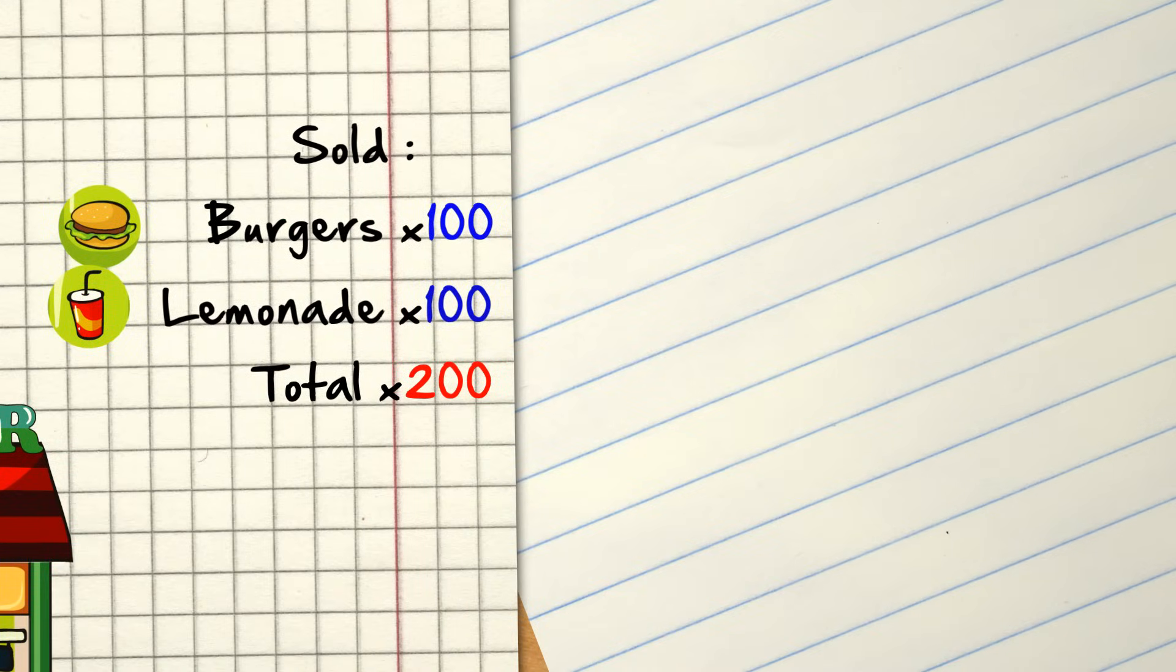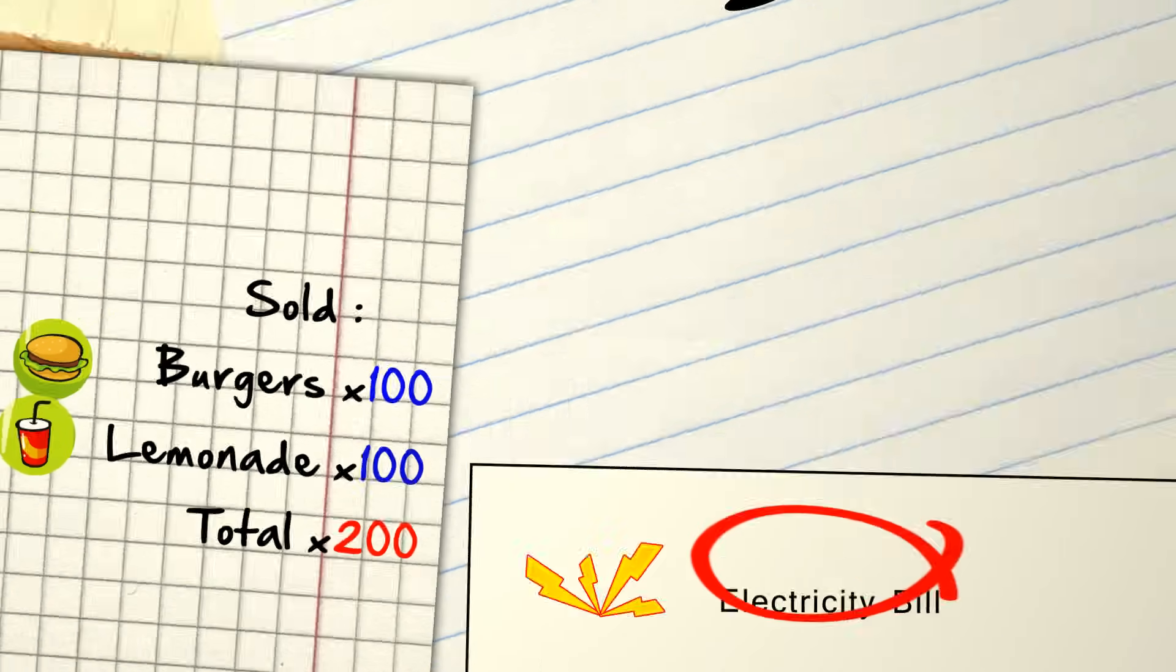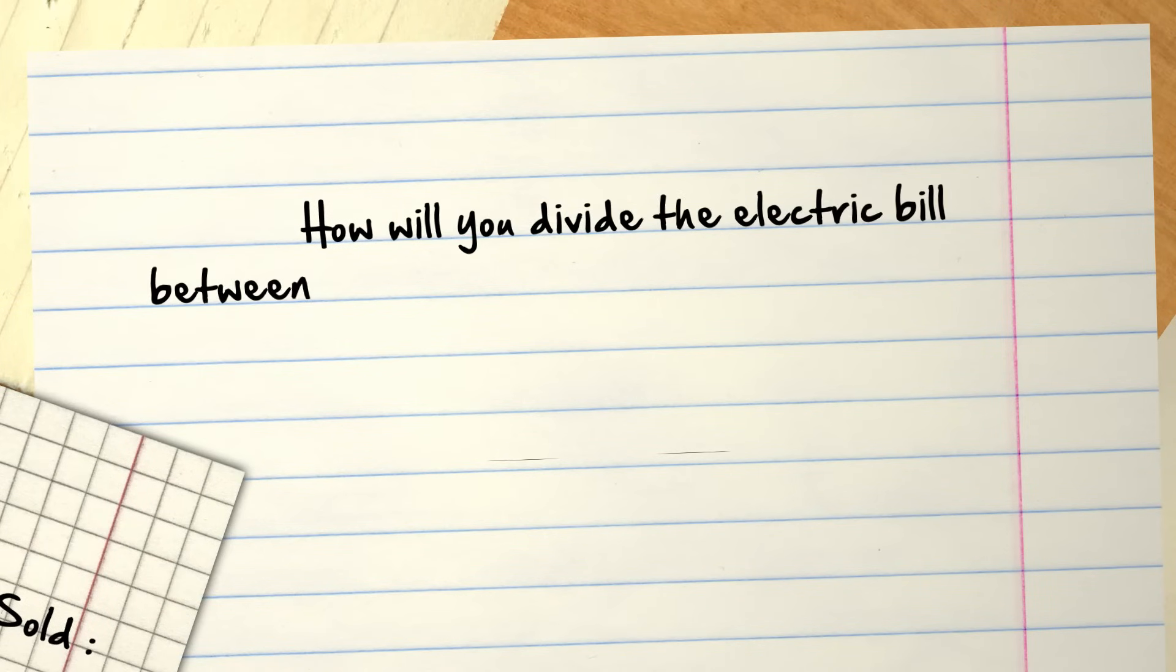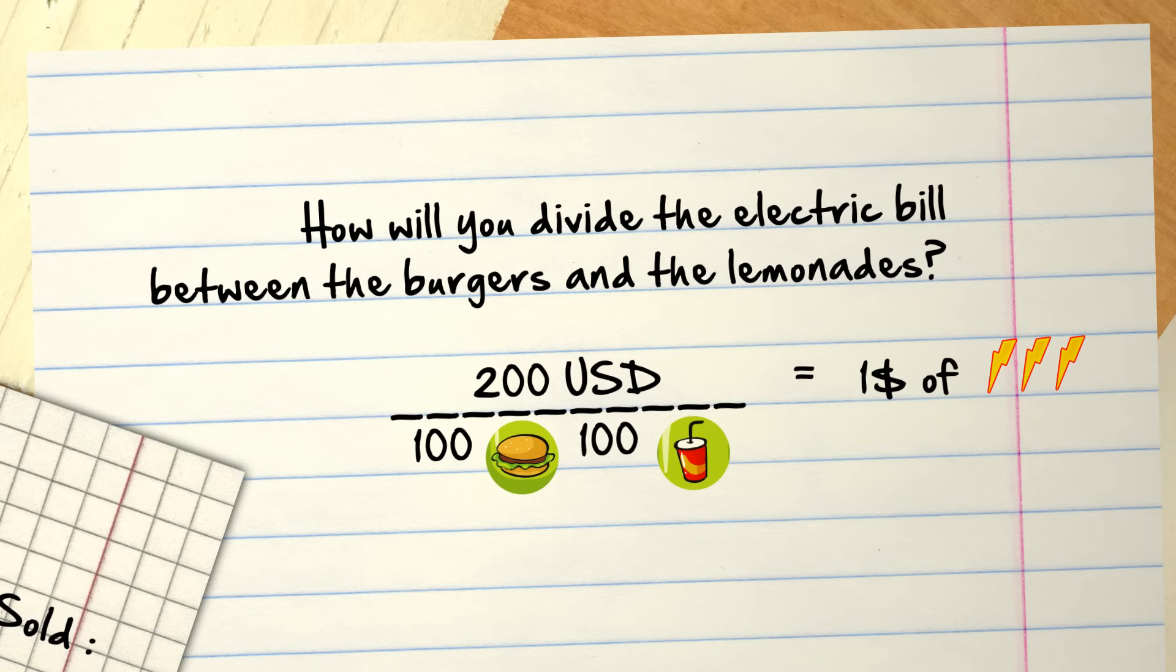What if at the end of the month you have an electric power bill of $200? How will you divide the electric bill between the burgers and the lemonades? Easy! $200 divided by 200 items equals $1 in electric power for each burger or lemonade sold.